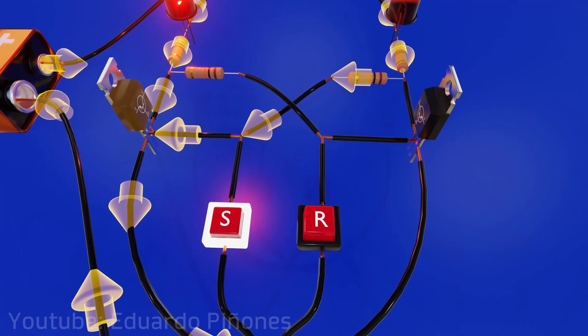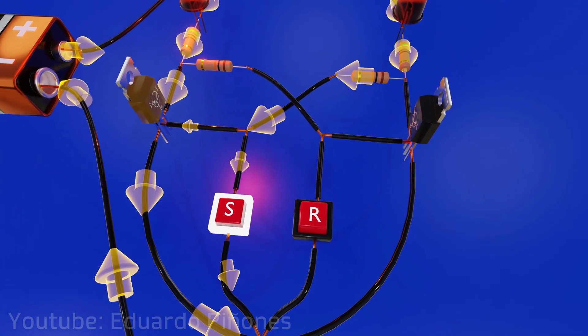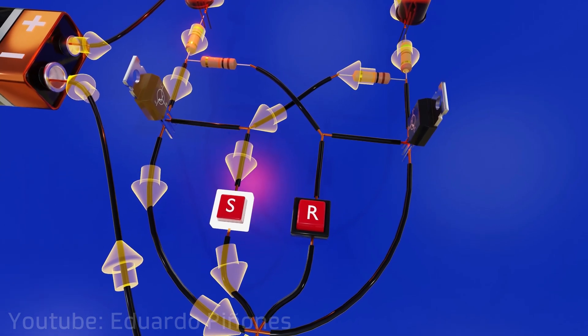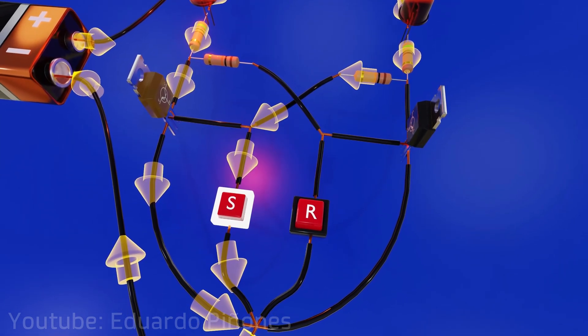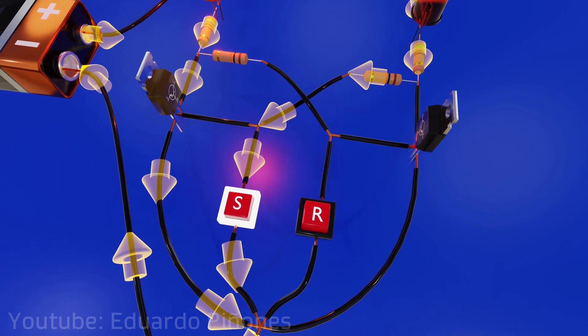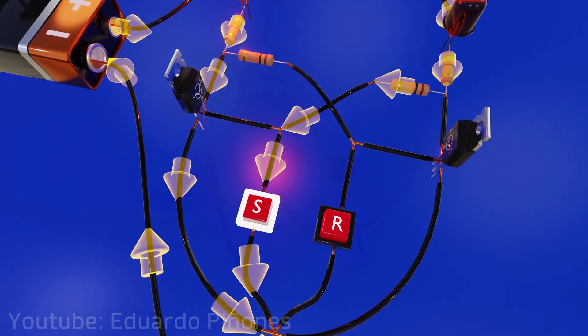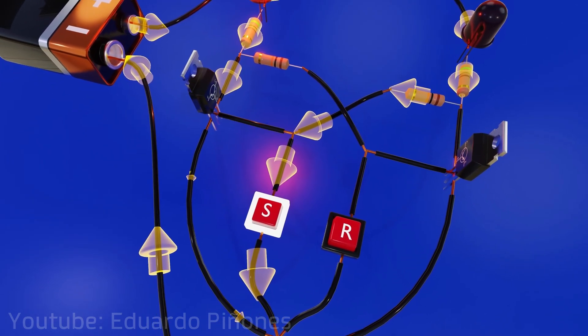First, the current that used to reach the base of the transistor will now have a path of lower resistance and therefore will no longer reach it, but will be diverted through the connection generated by the button. Second, since the transistor will not receive current at the base, its electrical resistance will increase and will no longer allow current to pass between the collector and emitter as easily.